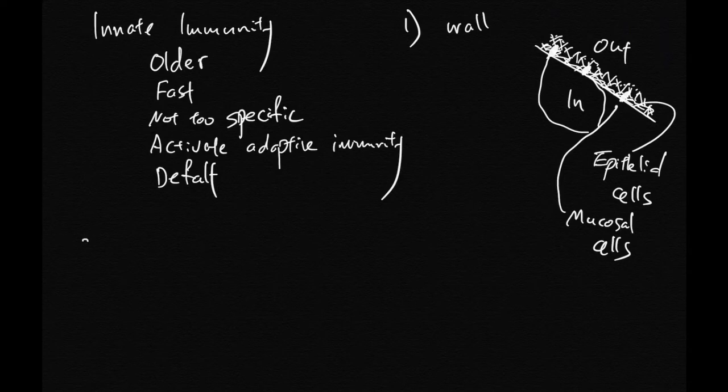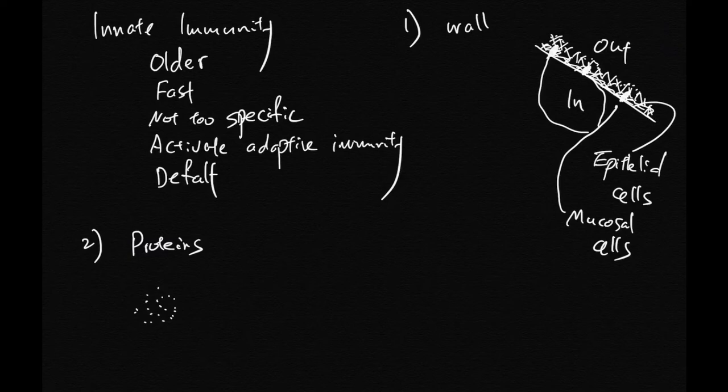And number two, proteins. Innate immunity has cells that secrete special proteins, complementary proteins and things that just float around and can bind to pathogens, damage particles, and trigger more innate immunity response or the adaptive immunity.